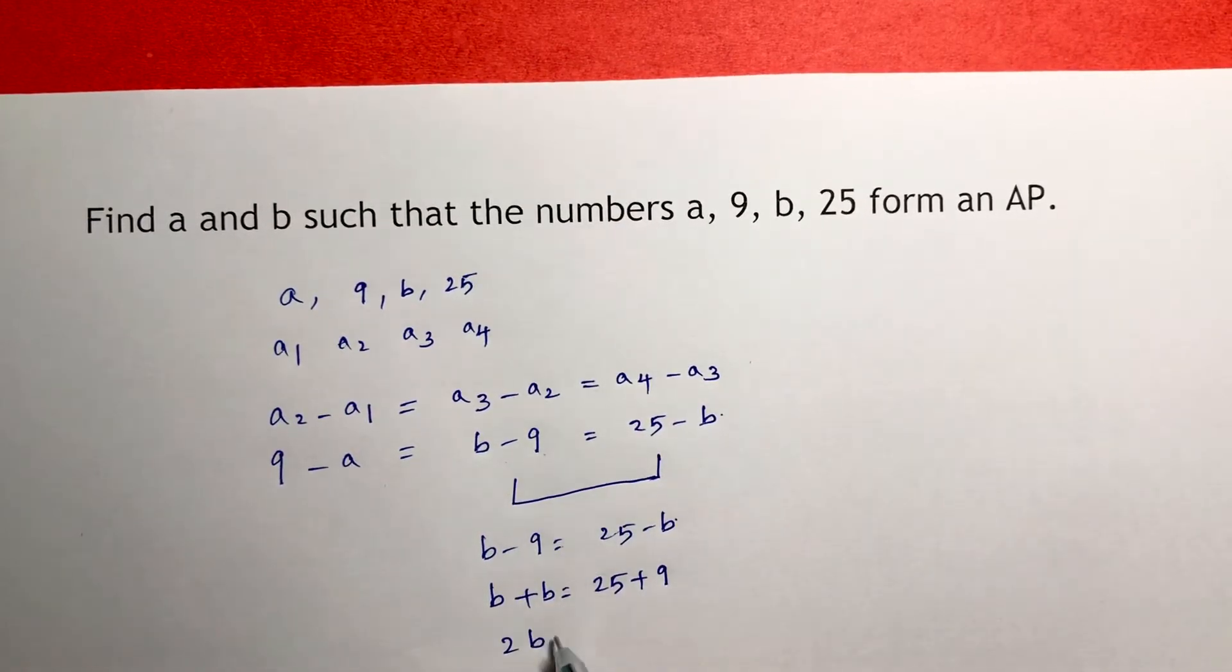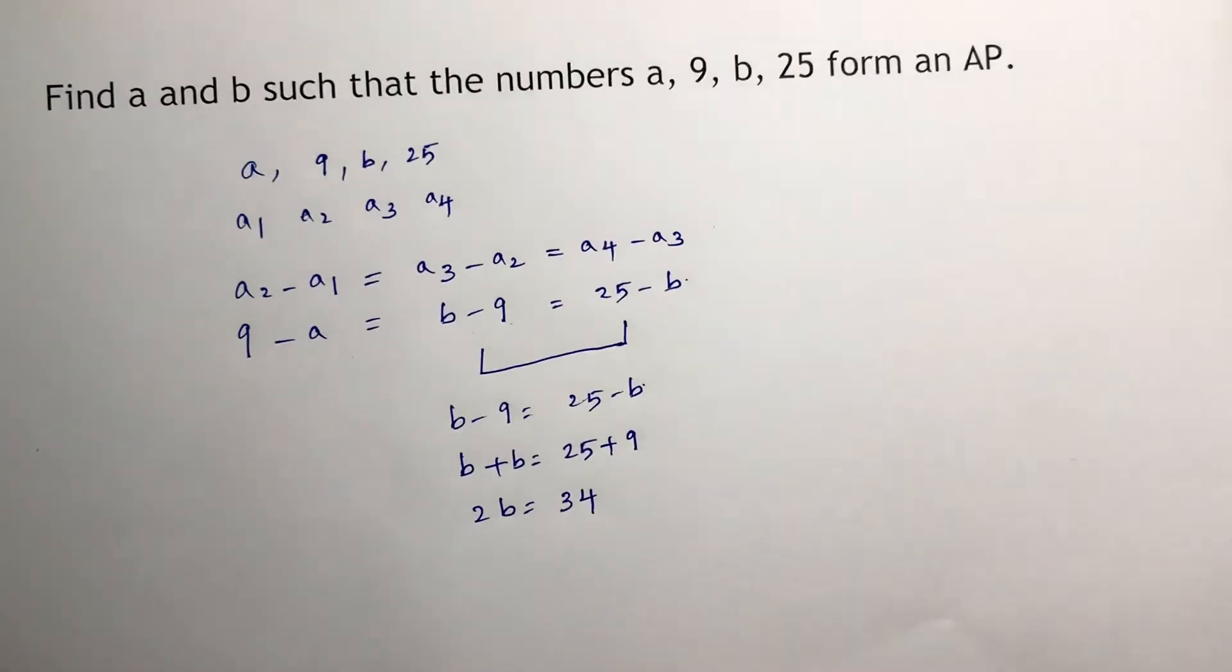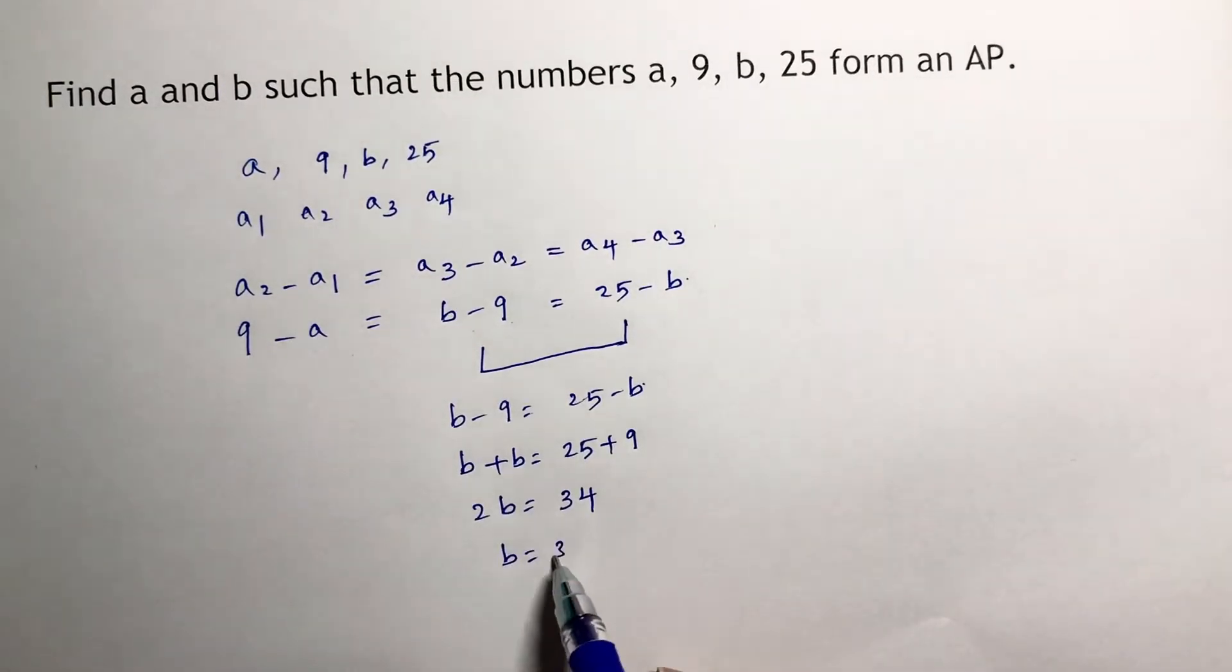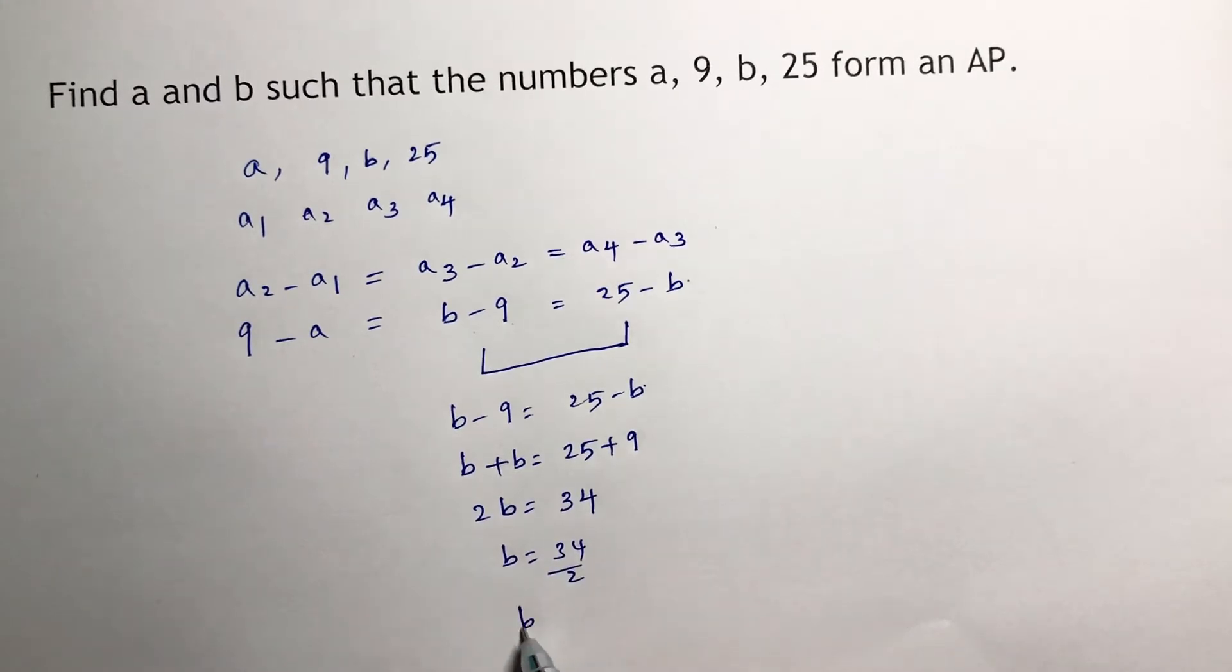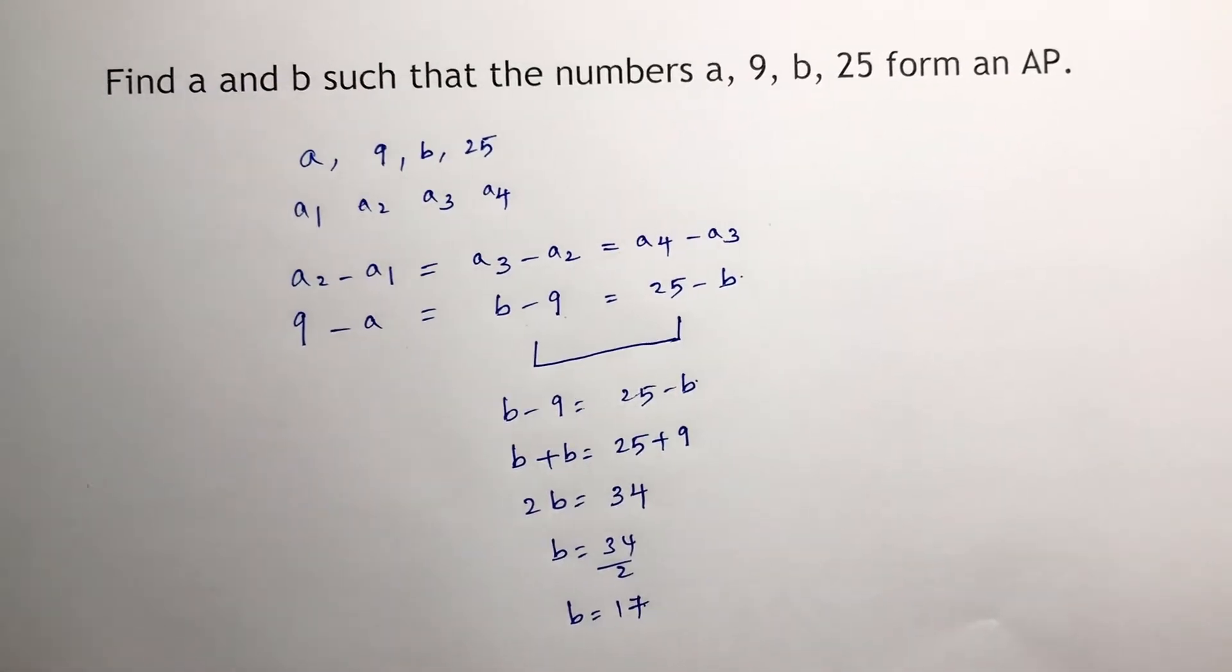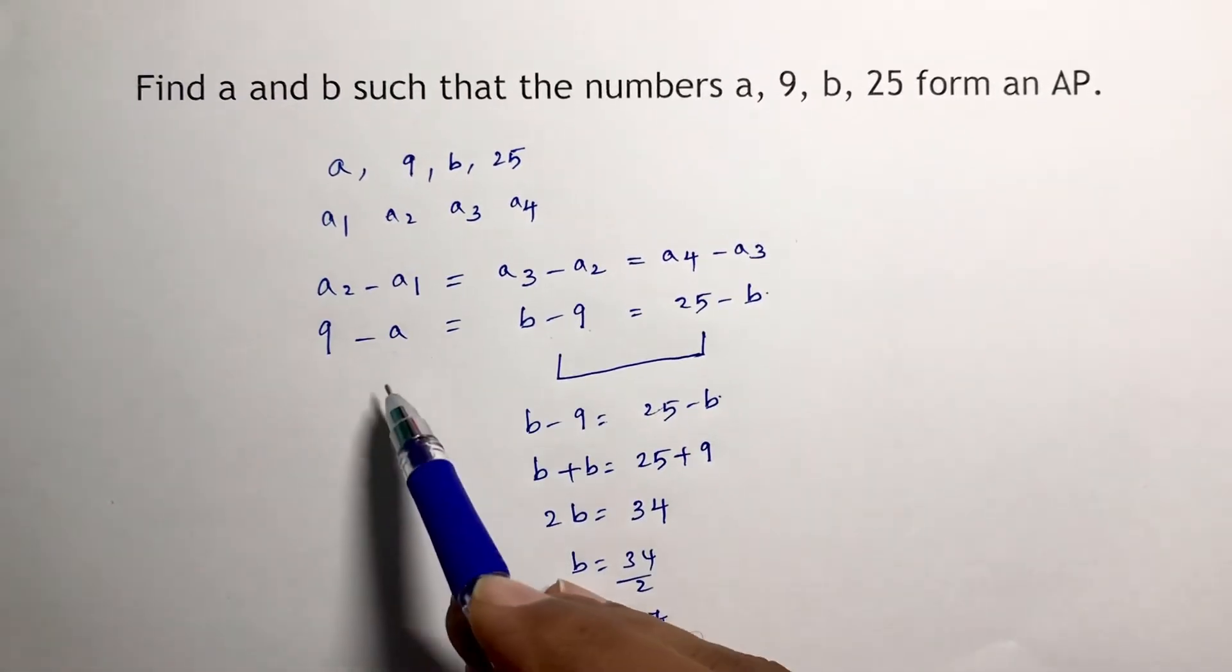So the value of b is 34 by 2, which is 17. The value of b is 17. Now you can equate these two.